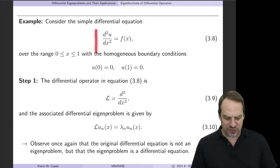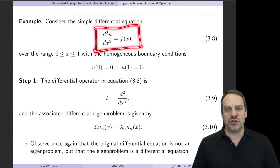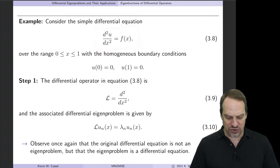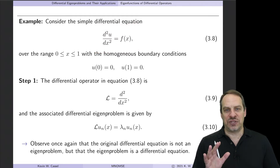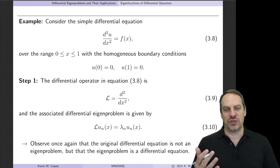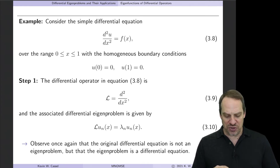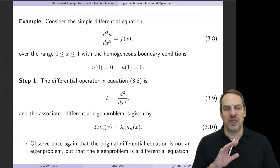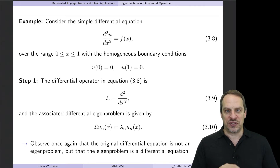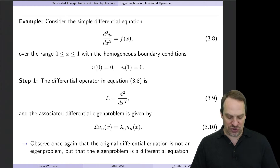Here is our example. The differential equation we want to solve is d squared u dx squared is equal to a known f function. Now, obviously, if f is of certain forms, we can simply integrate twice, get the solution, and we're done — we don't need this method. However, if we have more complicated f functions, and eventually more complicated differential operators as well, we want to use this simple example to illustrate the four-step process for getting the solution using the eigenfunction expansion approach.